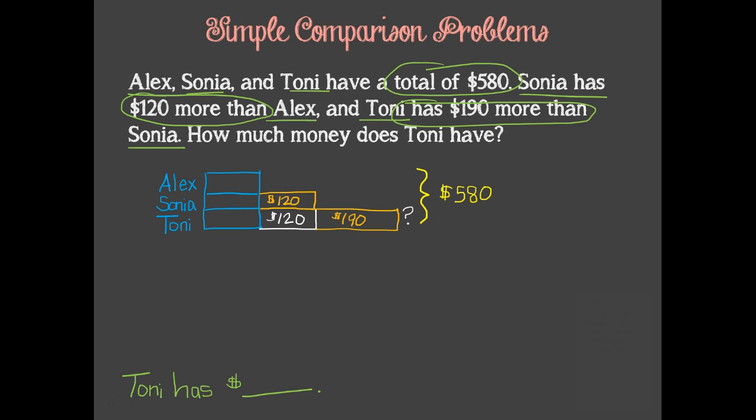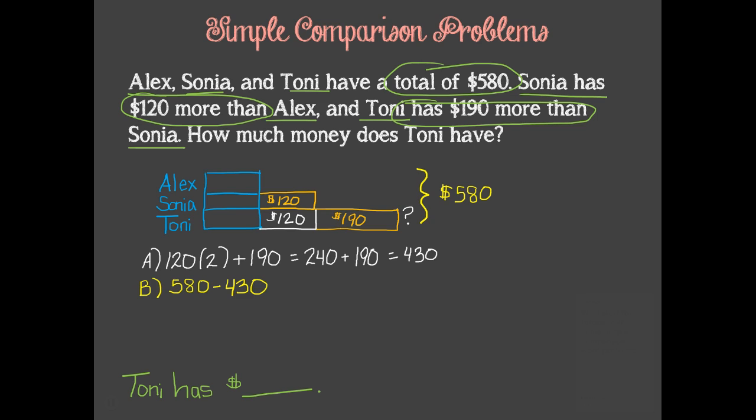First, we have to add up the dollar amounts we know, so we can find out what remains in the three blue bars. 120 times 2 plus 190 equals 240 plus 190, which equals 430. Since we know the total of all of their money is $580, we can subtract the $430 from that to find out what is left. 580 minus 430 equals 150. That means that these three blue units together total 150.